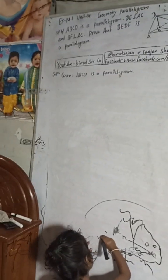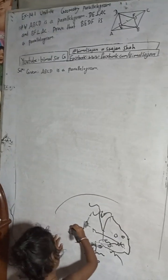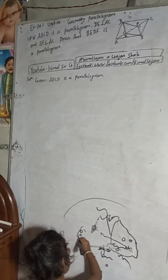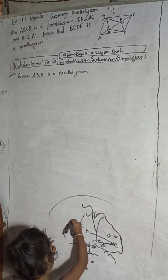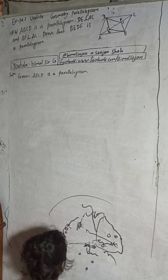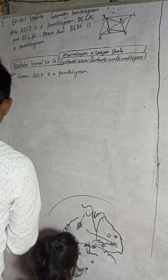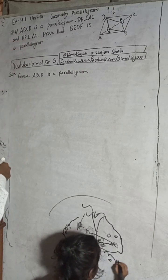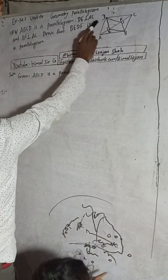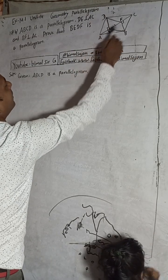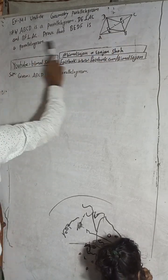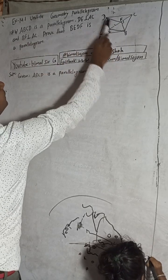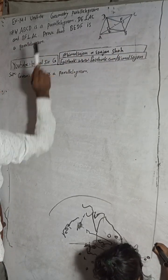Now I will solve this question. The question is: ABCD is a parallelogram. DE is perpendicular to AC, and BF is perpendicular to AC. We have to prove that BEDF is a parallelogram.